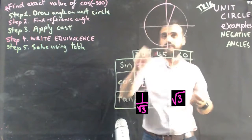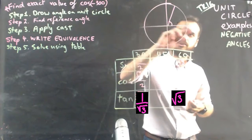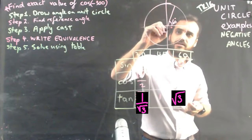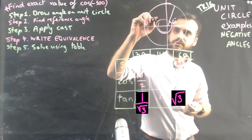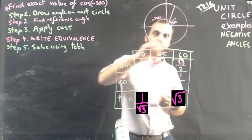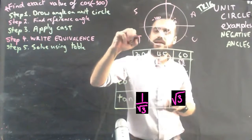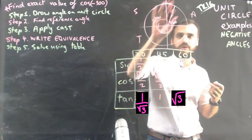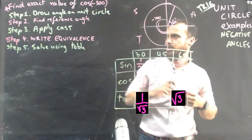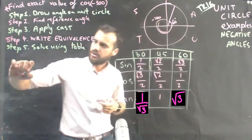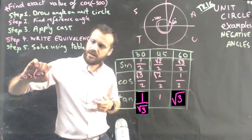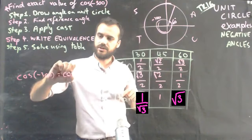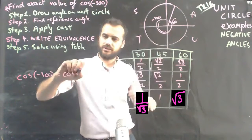Every step after this is the same. Find the reference angle — the acute angle between the x-axis and the line. That's 60 degrees, that's negative 300 there. Apply CAST — C-A-S-T — it's in the all quadrant, so it's definitely going to be positive. All things that appear in there are going to be positive. Write the equivalence: cos negative 300 is equal to cos of the reference angle, 60 degrees.